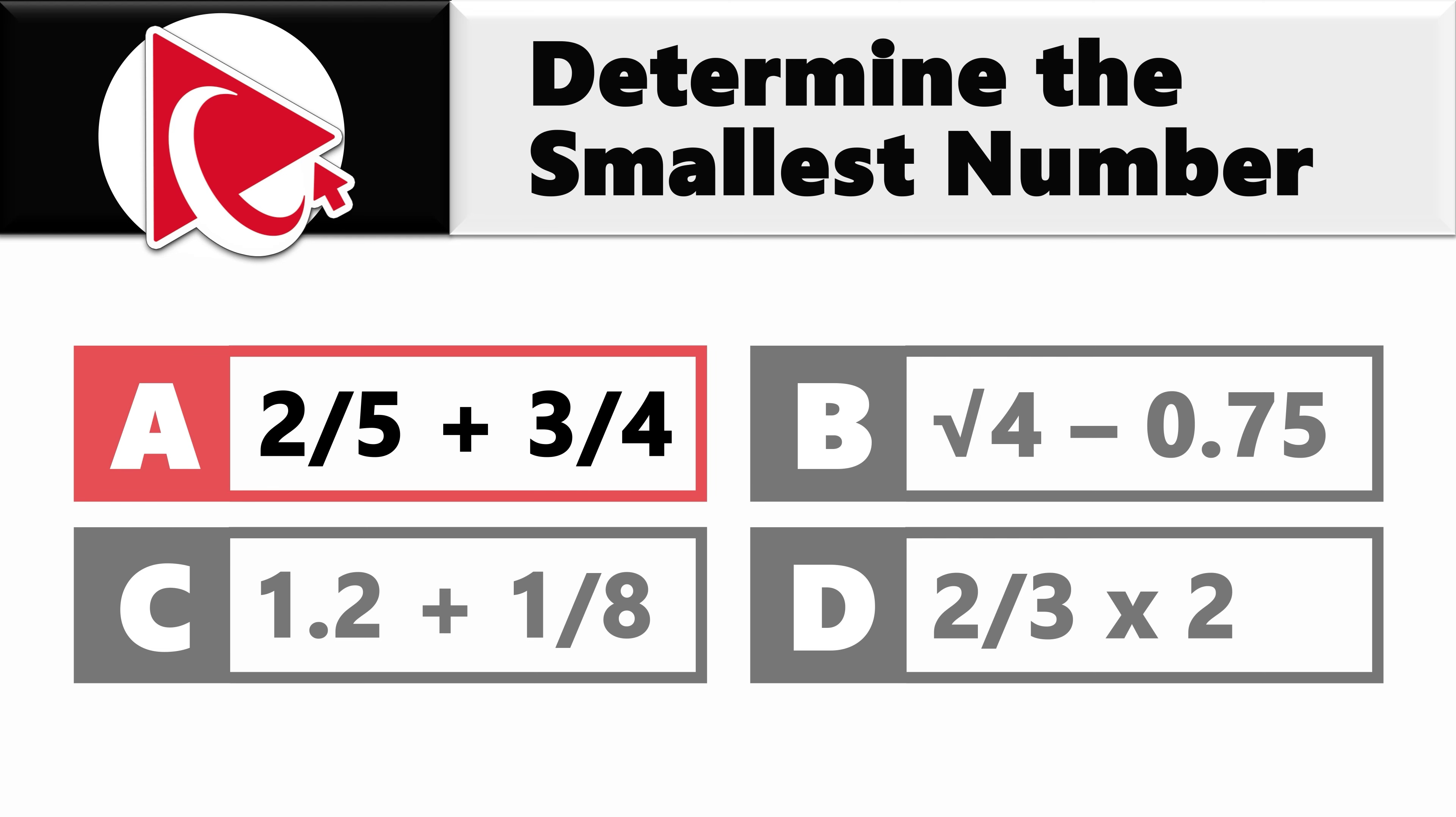You need to determine the smallest answer among four possible choices. Choice A: 2/5 plus 3/4. Choice B: square root of 4 minus 0.75. Choice C: 1.2 plus 1/8. And last but not least, choice D: 2/3 multiplied by 2.